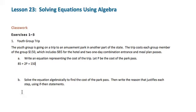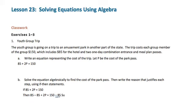So we'll start with: if 85 plus 2P equals 150, then 85 minus 85 plus 2P equals 150 minus 85. And that is the subtraction property of equality.